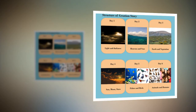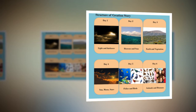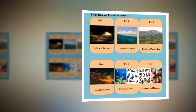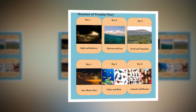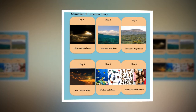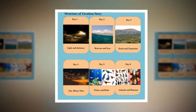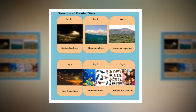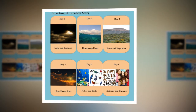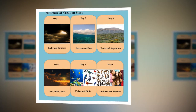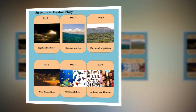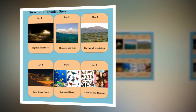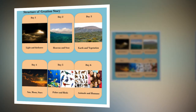In the three last days, He puts furniture in the spaces. On day four, corresponding to day one when there was day and night, He creates the sun, the moon, and the stars — putting furniture in the day and in the night. On day five, corresponding to day two when He created the heavens and the seas, He creates the birds of the air and the fish of the sea. On day six, corresponding to day three, He created the animals and the human being.